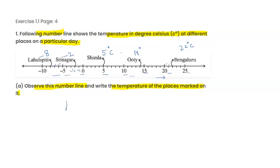Lahaul-Spiti minus 8 degree Celsius, which means it's very cold there. Srinagar minus 2 degree Celsius.